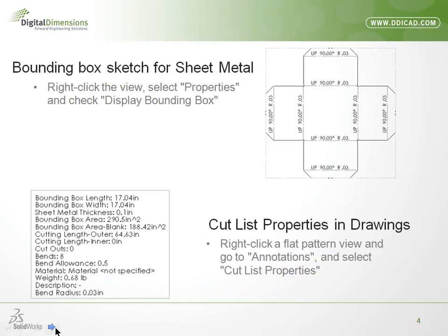Next we've got a bounding box sketch for sheet metal. I'll show you where that's at and how it comes on. We also have cut list properties in drawings. This shows up for weldments and also sheet metal, so we can get a wealth of information in there. Most of it is probably more beneficial for the sheet metal side of things.